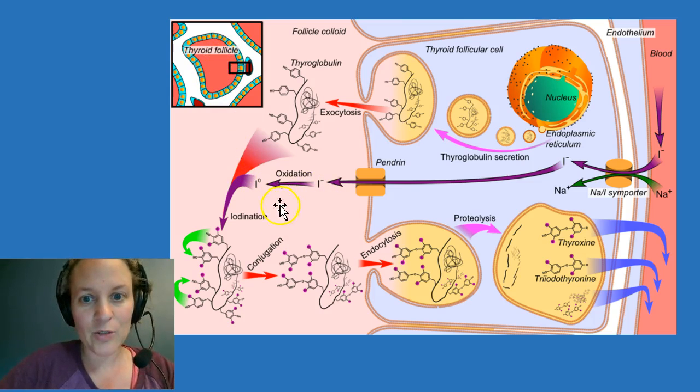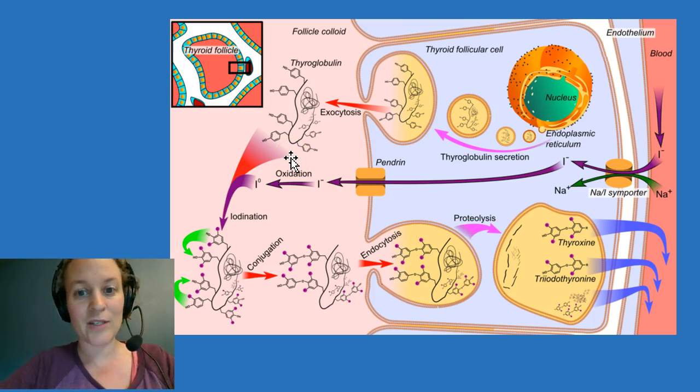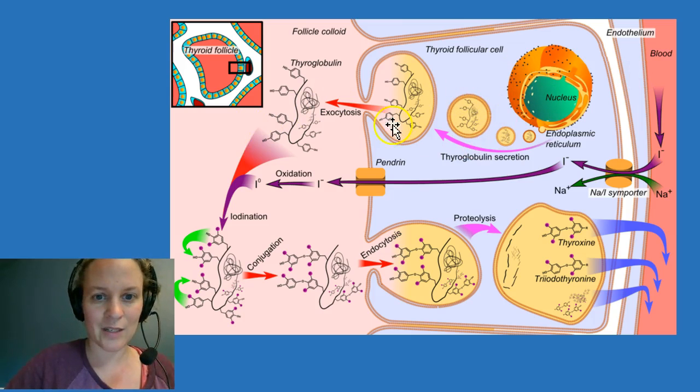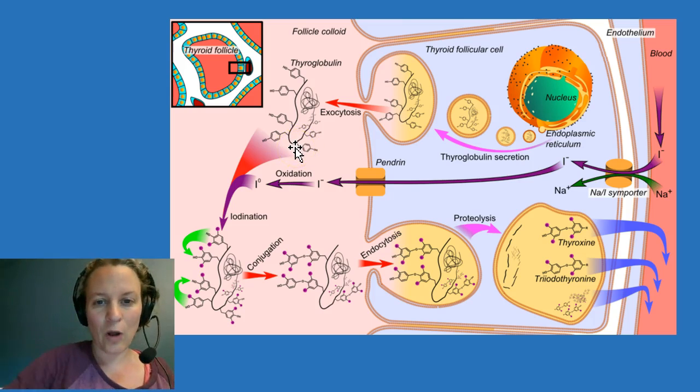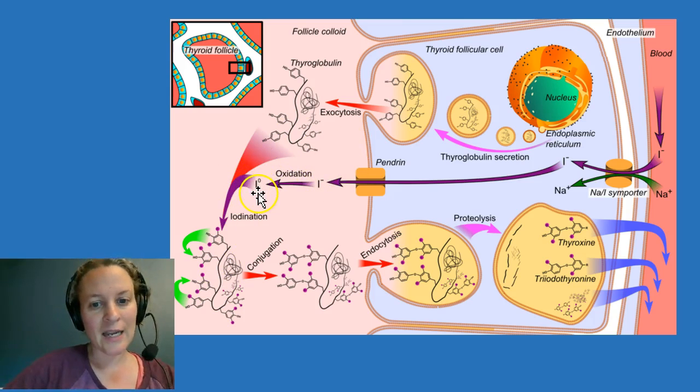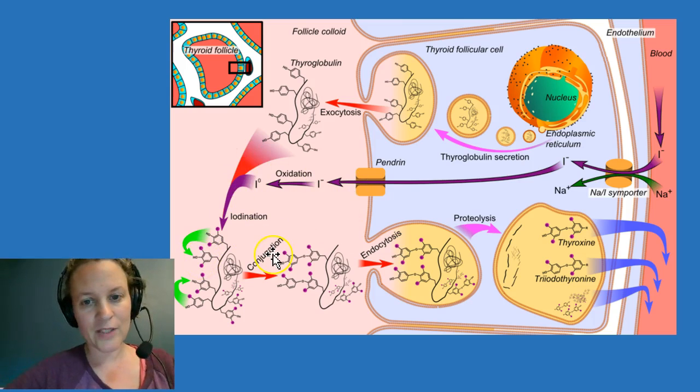And once the iodide is out into the colloid—so now it's in this dark pink part right here—once it's in the colloid, it's going to hook up with something called thyroglobulin. That is just a long chain of tyrosine, essentially, that's produced in the thyroid cell itself and then excreted into the colloid via exocytosis. So you have all of these—each one of these little things here is a tyrosine residue. So once the iodine is pumped into the colloid, it's converted back into iodine by oxidation, so taking off an electron, and then that iodine is added on to the tyrosine.